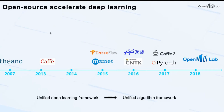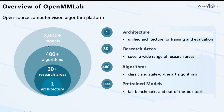We announced the OpenMMLab project in 2018. OpenMMLab is an open source computer vision algorithm platform with a unified architecture for training and evaluation. It covers more than 30 research areas, implementing over 400 algorithms, including classic and state-of-the-art ones. We also released more than 3,000 pre-trained models and built fair benchmarks with standard training settings. We hope these models can provide a solid foundation to researchers.